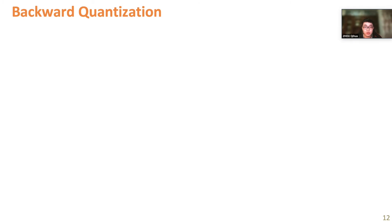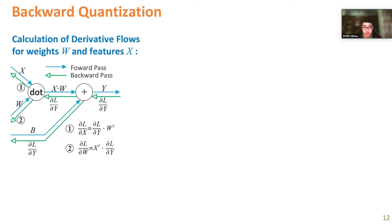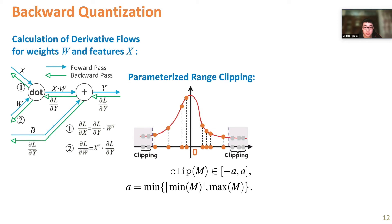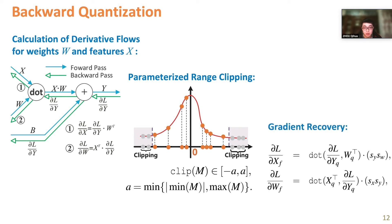We also employ data quantization in the backward path, as gradient calculation can also be abstracted as a series of dot products. For higher computational efficiency, we calculate gradients based on chain rules instead of numerical differentiation. The derivative flows go through the entire network from the last layer to the first. As intermediate flows are also quantized before the dot product, we address the zero-point offset issue by proposing the parameterized range clipping method in the symmetric scheme, bounding values in the [-8, 8] domain, so that fp32 gradients can be recovered based on the int8 dot product.